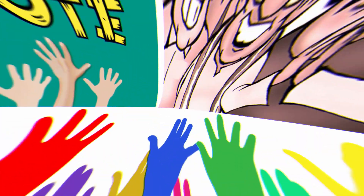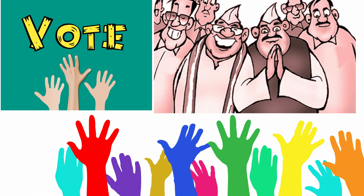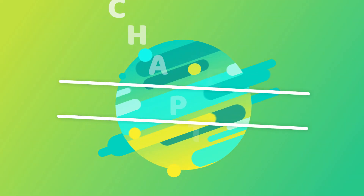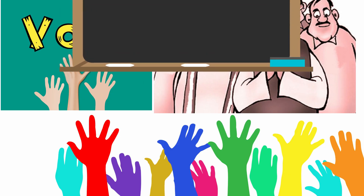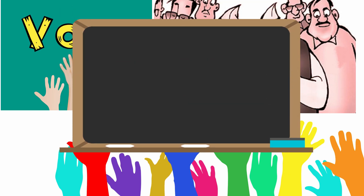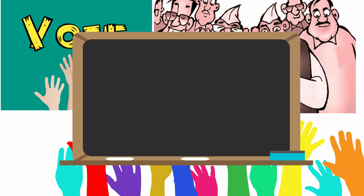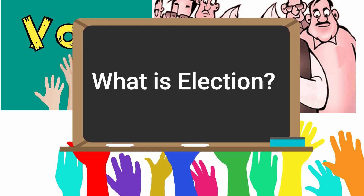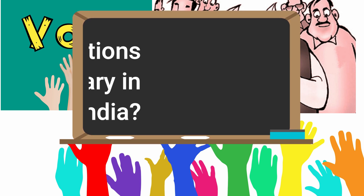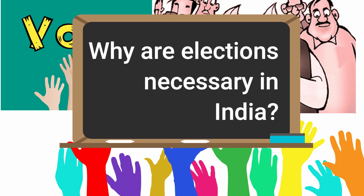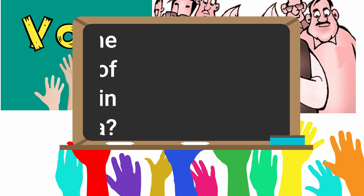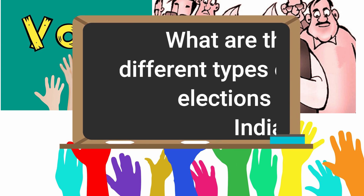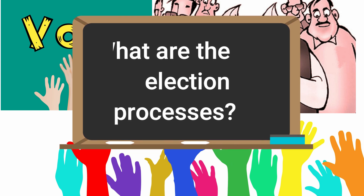Welcome students, today let us learn Social Studies Chapter 19, titled 'Elections in India'. To understand the chapter in short, let us focus on: first, what is election; second, why are elections necessary in India or any other democratic countries; third, what are the different types of elections we have in India.